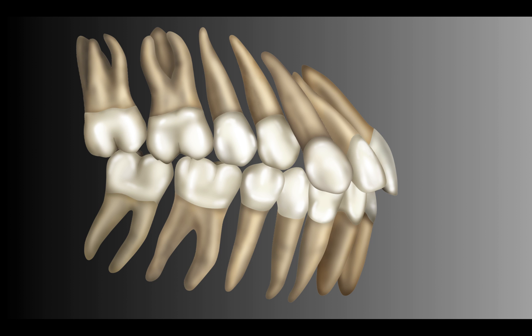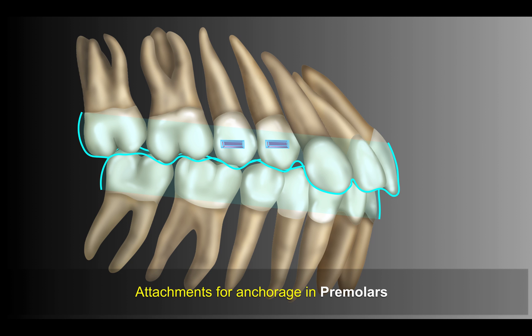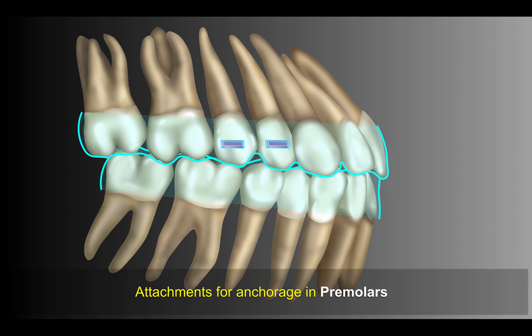In cases where we have a deep-bite, what we are going to do is maintain the torque and use the premolars as anchor to do the intrusion movement. We have to know about when to do IPR if we need that. The concept is simply using the premolars as anchor to intrude the incisor.